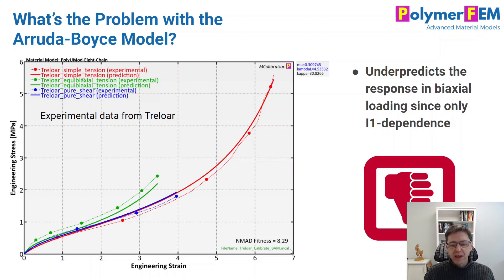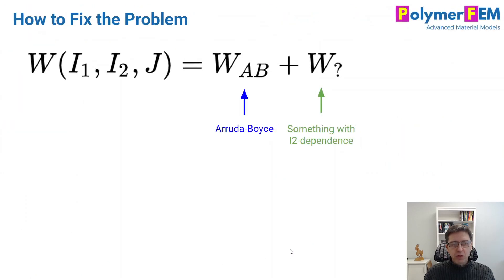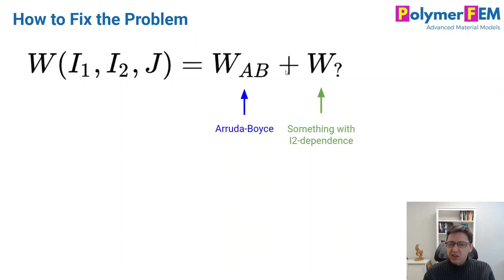What can we do to improve this? Well, here's the beauty of hyper-elasticity — it's based on a scalar energy function. We have an energy function W_AB, the Arruda-Boyce version. We need to add something to it to make it work even better for other loading modes, and we need something perhaps with I2 dependence, because that's what's missing in the Arruda-Boyce model. So the question is: what would we add?